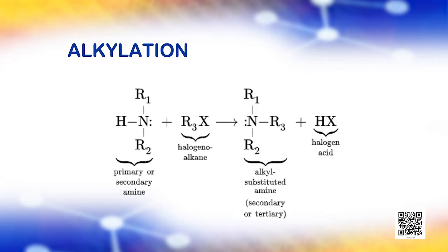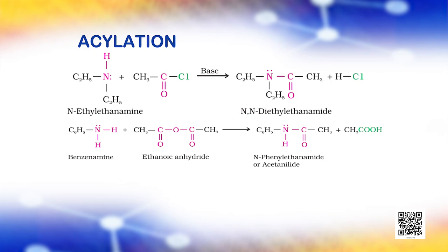Amines undergo alkylation on reaction with alkyl halides. Aliphatic and aromatic primary and secondary amines react with acid chlorides, anhydrides and esters by nucleophilic substitution reaction. This reaction is known as acylation. The products obtained by acylation reaction are known as amides. The reaction is carried out in the presence of a base stronger than the amine, like pyridine, which removes HCl so formed and shifts the equilibrium to the right-hand side.